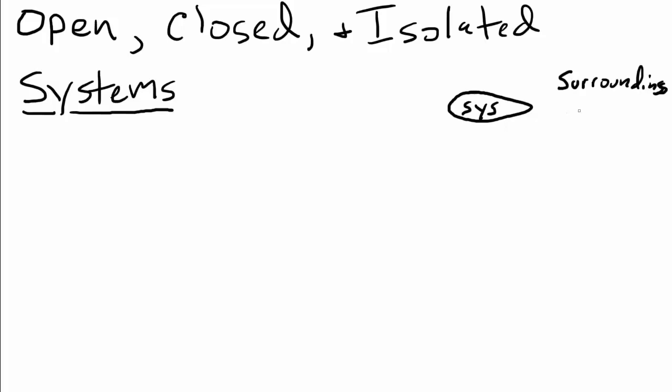If matter is able to go into and out of a system, and energy is also able to go into and out of the system, then we call that an open system. So basically there's nothing that's separating the system's matter and energy from that of the surroundings, and the system and the surroundings can exchange both of those things.